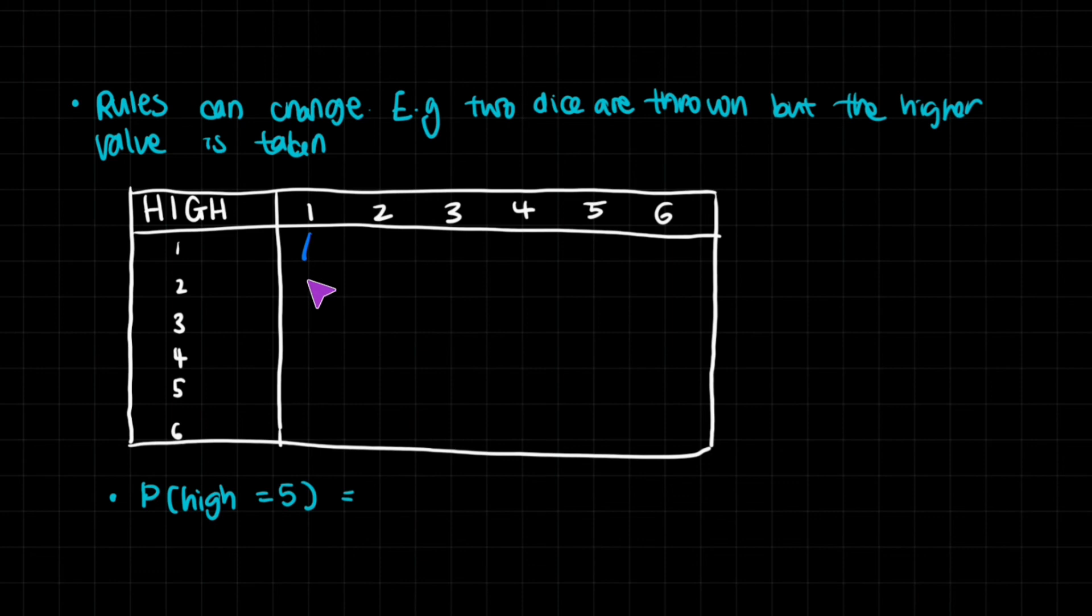It makes sense. One and two higher value is two, two and two higher value is two, and then three, four, five, six.